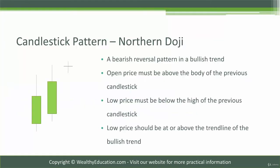First, let's talk about what a northern doji candlestick pattern is. It's a bearish reversal pattern in a bullish trend. The opening price of the doji must be above the body of the previous candlestick. The low price of the doji must be below the high of the previous candlestick, and the low price should be at or above the trend line of the bullish trend. So a northern doji represents indecision in the market in a bullish trend.